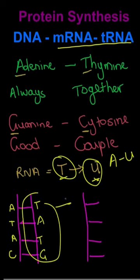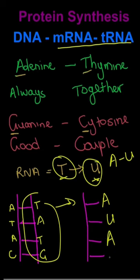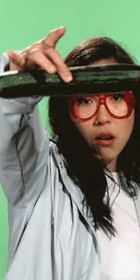So let's say this strand is copied onto the RNA: thymine will become adenine, adenine will become uracil, and cytosine will become guanine.